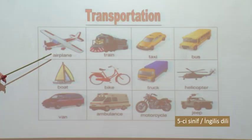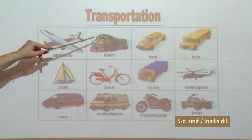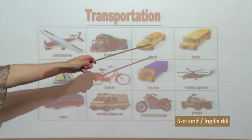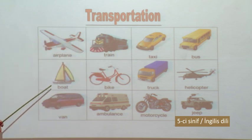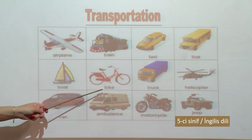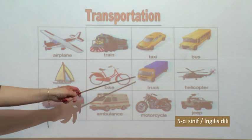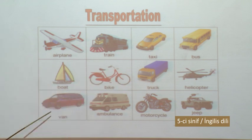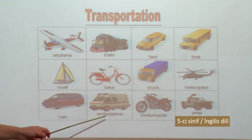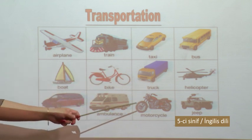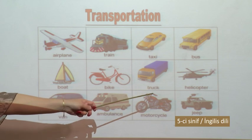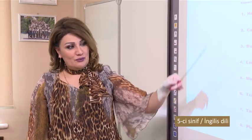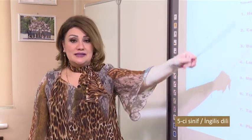This is the picture of airplane, train, taxi, bus, boat, bike, truck, helicopter, van, ambulance, motorcycle, jeep. As you see here we have some words and some pictures.